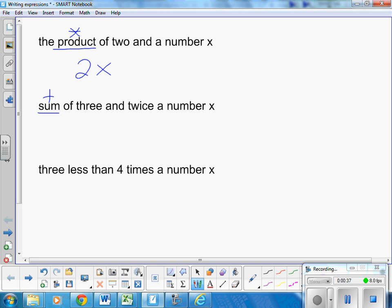Sum is add. The sum of 3 and twice the number x. That's 2x. Twice the number x. So this is the sum of 3 and twice the number x.